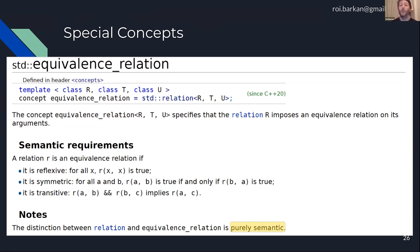If I have two algorithms and I want to constrain one by equivalence_relation and the other by relation, I cannot do it because the compiler has no way to choose between the two. Moreover, if I have a function I want to constrain to equivalence relations only, and I want the compiler to stop me if I give it another relation, I have no way to do it.